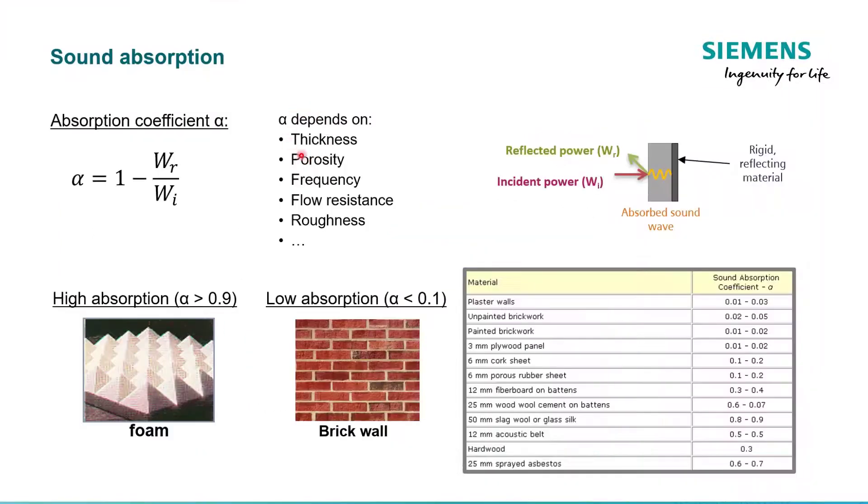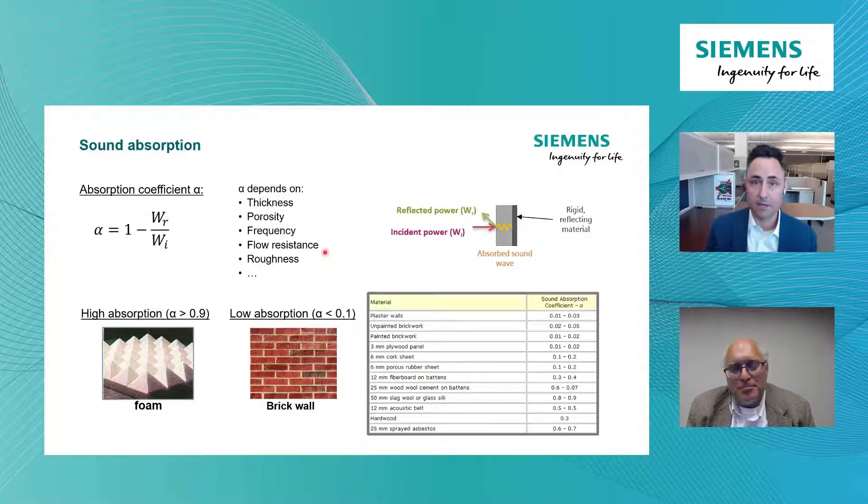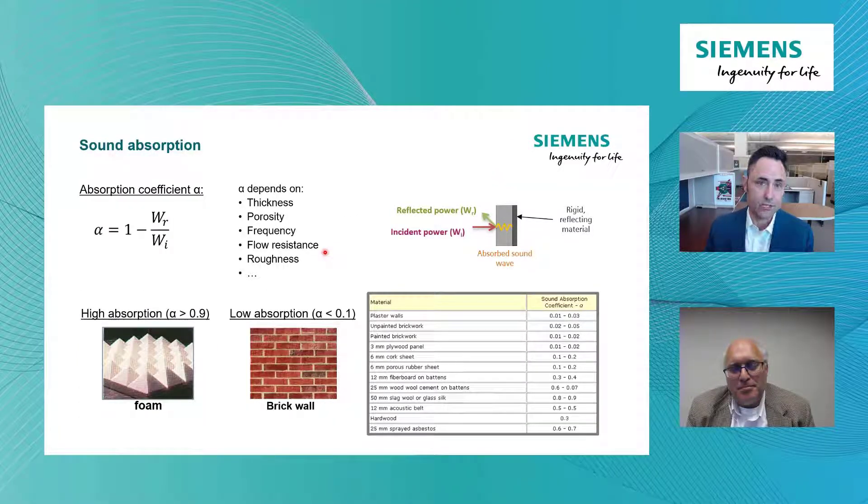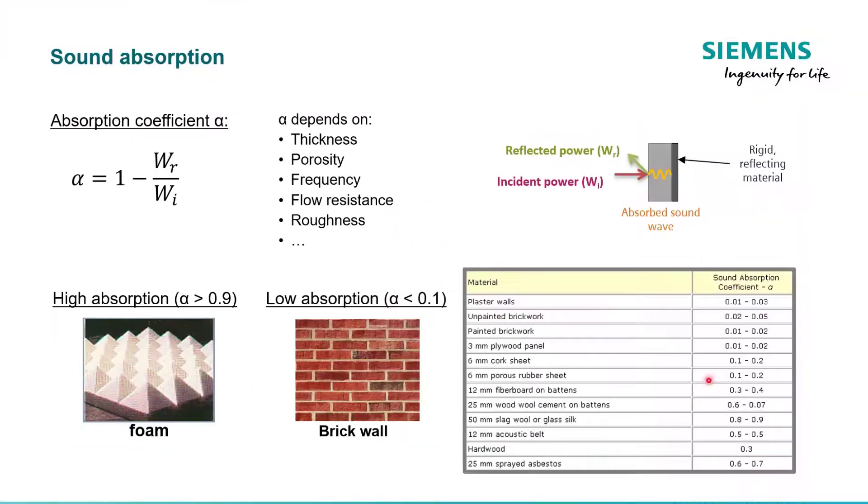Typically alpha will depend not only on thickness, in terms of frequencies that are absorbed, but really the porosity, how well air flows through the material. If there's a lot of air resistance or flow resistance for the air, it's going to be a better absorber because it's going to be better at converting sound into heat. And you see some example absorption coefficients in this table for various materials.